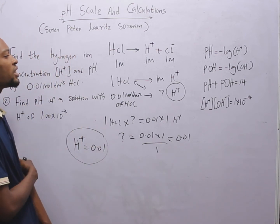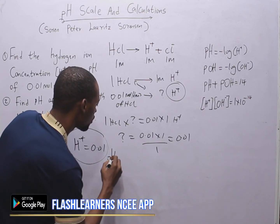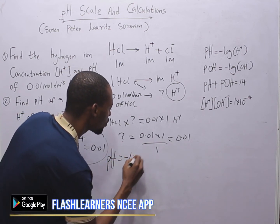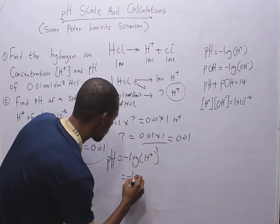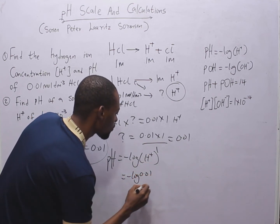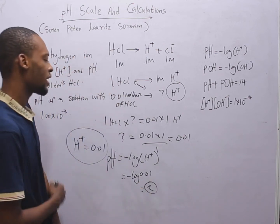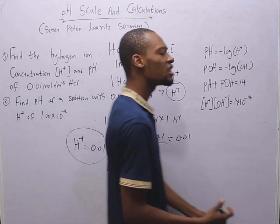How about pH? pH is equals minus log of H plus. This equals minus log 0.01, which will give you 2. That is the answer.